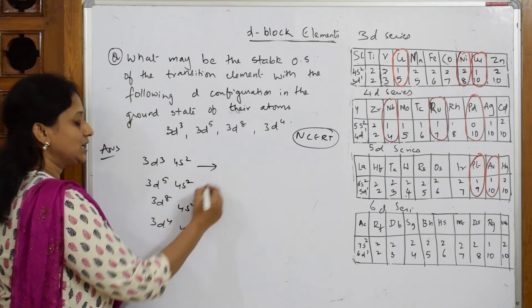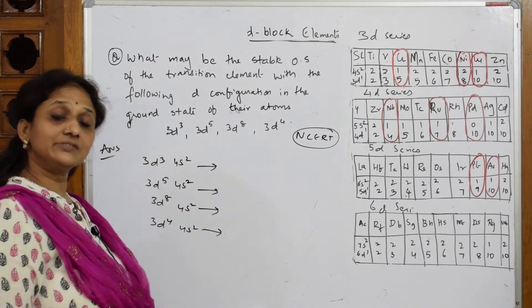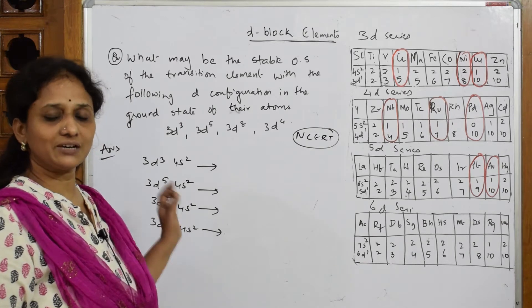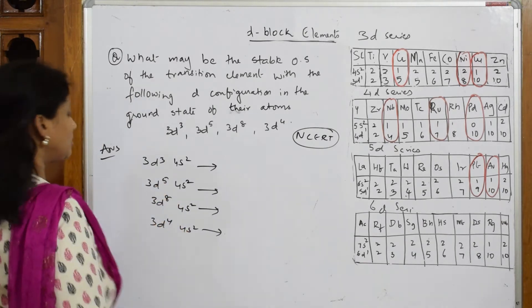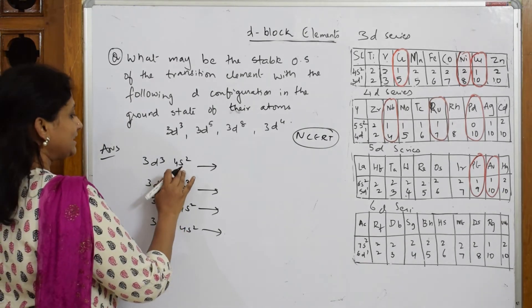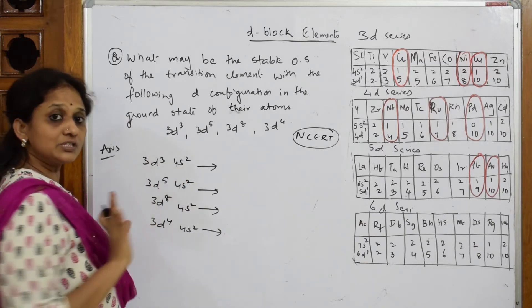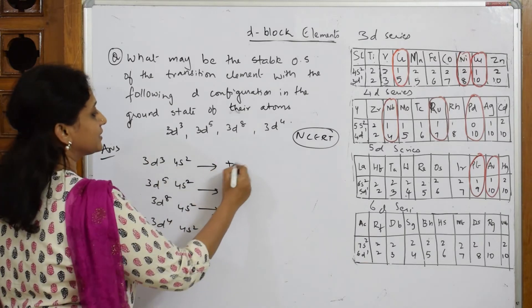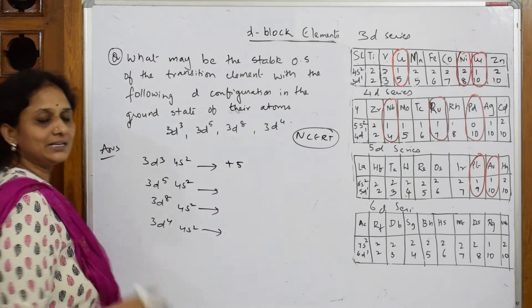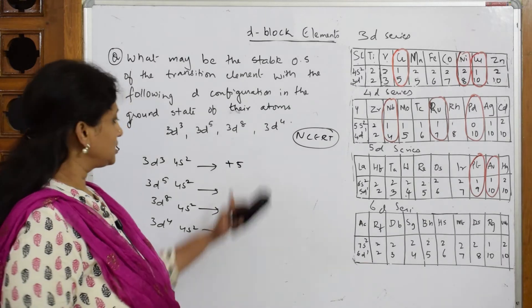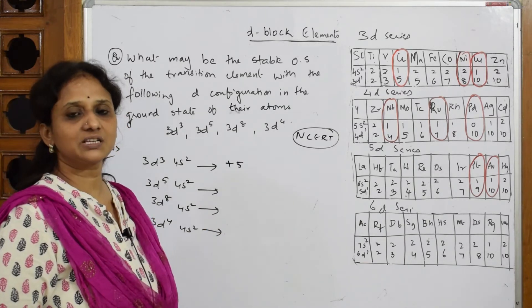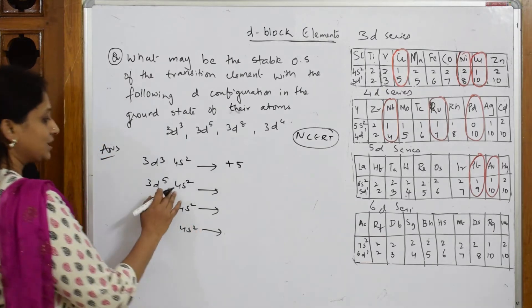Now see how many electrons need to be removed to attain stable configuration. For the first one here, 3 plus 2 - if it loses 5 electrons, that is +5, the leftover is stable inert gas configuration. So possible stable configuration is +5.